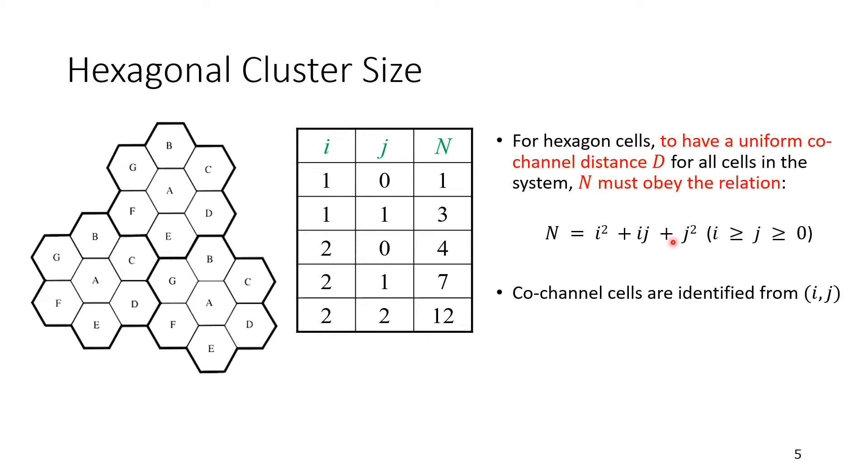So the co-channel cells can be identified by i j, as I'm going to show you in the next slide. But in the following table, you can see that we're filling with integers, respecting the fact that i is greater than or equal to j. So you have 1, 0. We are not taking the obvious 0, 0 because it will have no cells. So we have 1, 0, 1, 1, 2, 0, 2, 1, 2, 2. You can continue, and you get here 1. By substituting i and j here, you got 1, 3, 4, 7, 12. There is no way you can substitute integers here respecting the relation, and you get an answer of 5 or 2. So this is why the cluster size would be 1, 3, 4, 7, 12, provided you want to keep the distance between the co-channel interferers, interfering cells uniform. So no wonder from now on that we see you use 7, 12, 19, and so on.